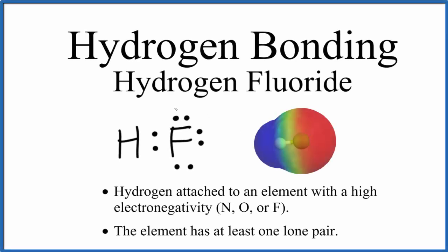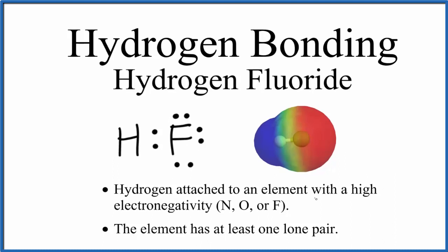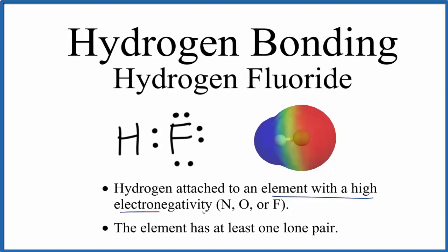Let's talk about hydrogen bonding in hydrogen fluoride. There are two criteria we need to address. First, one of the elements needs to have a high degree of electronegativity, and that's going to mean nitrogen, oxygen, or fluorine. We do have a fluorine atom here in HF.